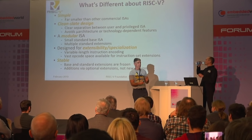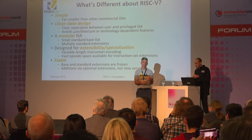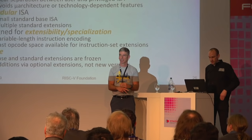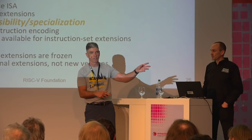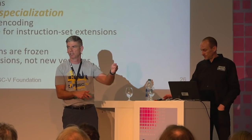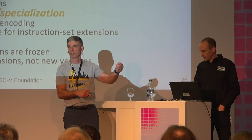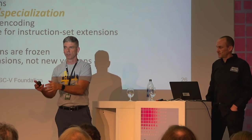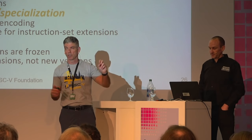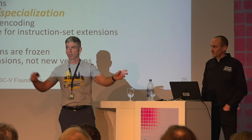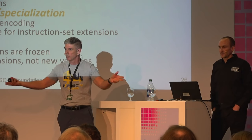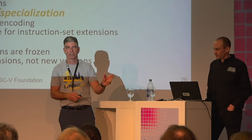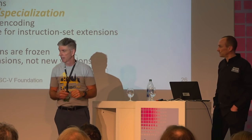Building on that extendability, once we lock a set of extensions in, they're frozen — they don't change. So it's a very stable design. Software written for those extensions will always run on that device. If years later we find something wrong with an extension, that extension won't change; we'll add a new extension instead. The point is those extensions are stable forever, making RISC-V really, really good for embedded applications.